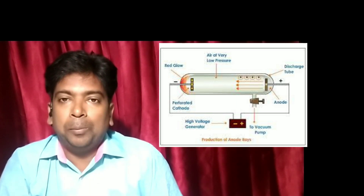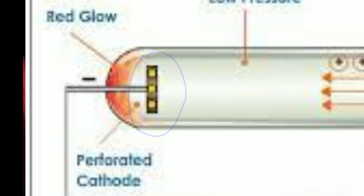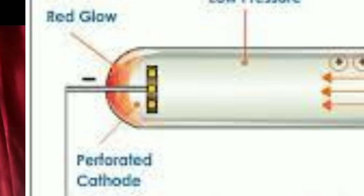It was in 1886 that Goldstein discovered positive rays along with the cathode rays in the cathode ray tube experiment. He made some modification in the cathode ray tube experiment — instead of a solid cathode, he took a perforated cathode. He observed a ray of particles moving in the opposite direction to that of the cathode rays, passing through the pores of the cathode and causing fluorescence on the wall of the discharge tube at the cathode end. He named it canal rays, as they were passing through the pores of the cathode.